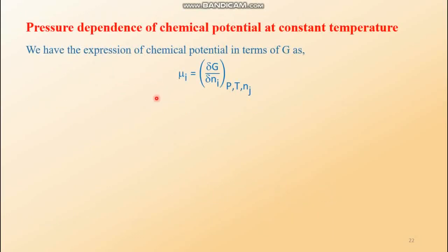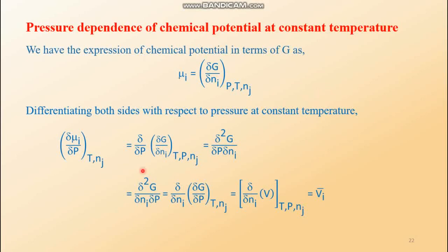The fourth topic is pressure dependence of chemical potential at constant temperature. Similarly, starting from μᵢ equals the partial derivative of G with respect to nᵢ at constant P, T, and nⱼ, and differentiating both sides with respect to pressure, we find that this expression equals the partial molar volume V̄ᵢ.